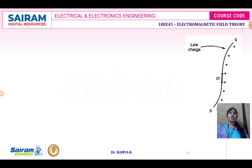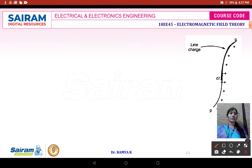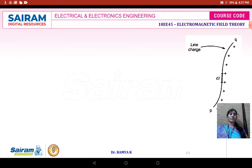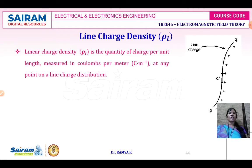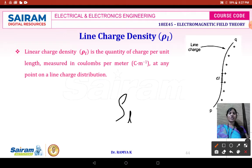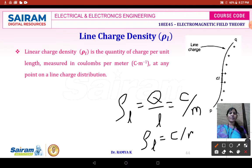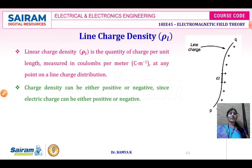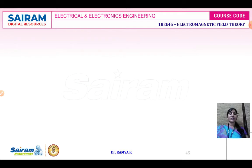The diagram for line charge density shows a line from point P to point Q of unknown length. If charge, irrespective of polarity, is distributed all along this length, it is line charge density, represented as rho L. The formula is Q divided by L. The unit for charge is coulomb and for length is meter, so the unit for line charge density is coulomb per meter. Charge density can be either positive or negative.